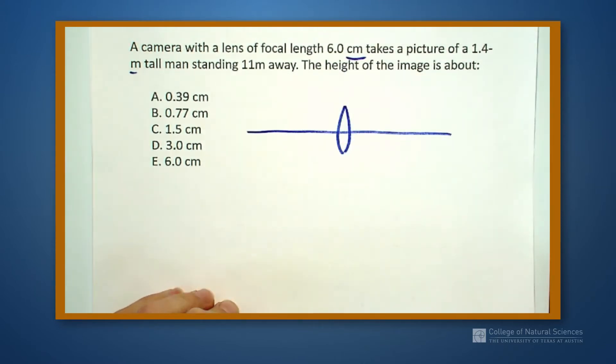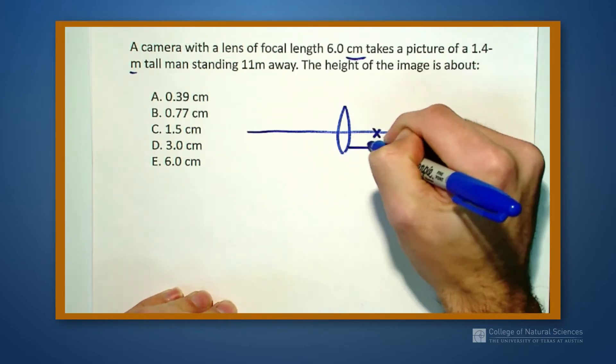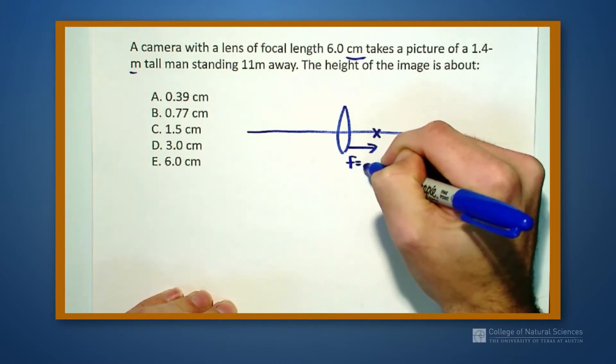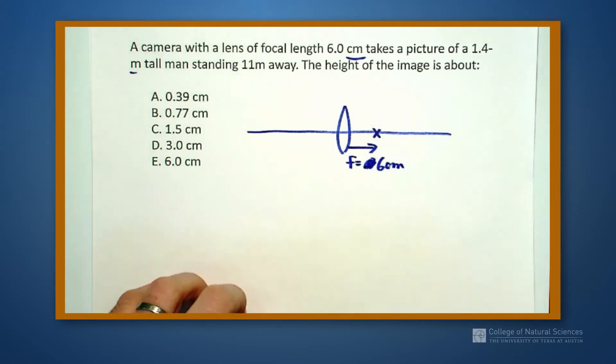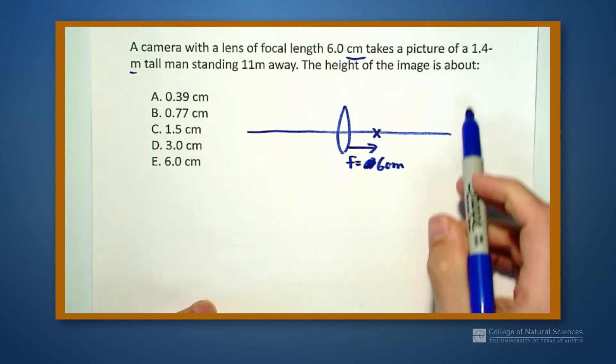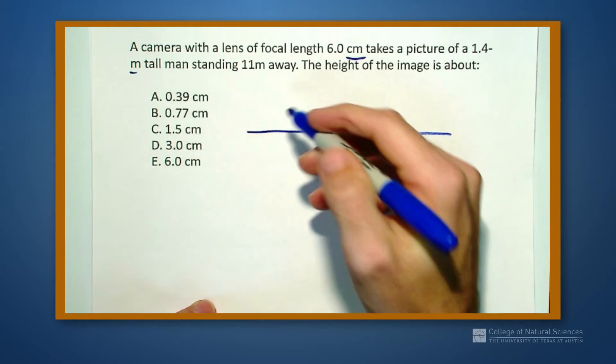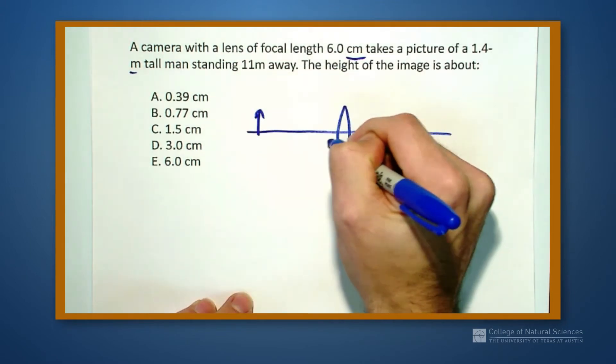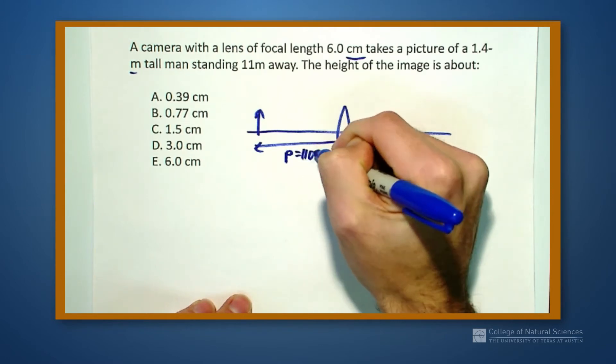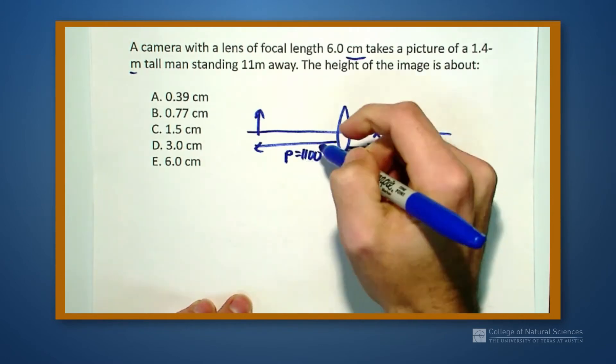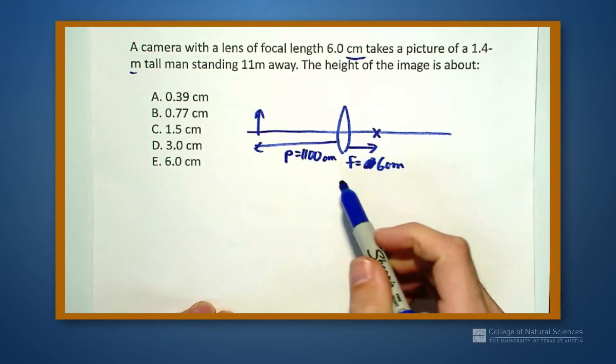So I have a camera that has a focal length of 6 centimeters. F equals 6 centimeters. I'm going to convert everything into centimeters. The man is standing 11 meters away, so my object distance is 11 meters or 1100 centimeters.